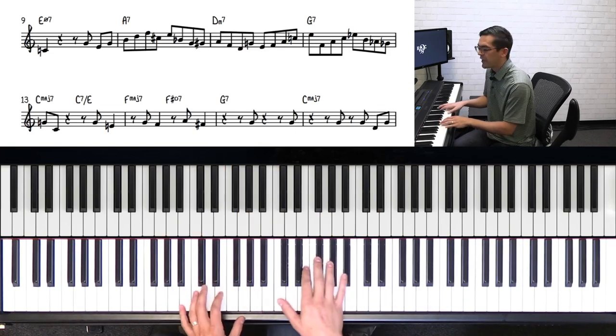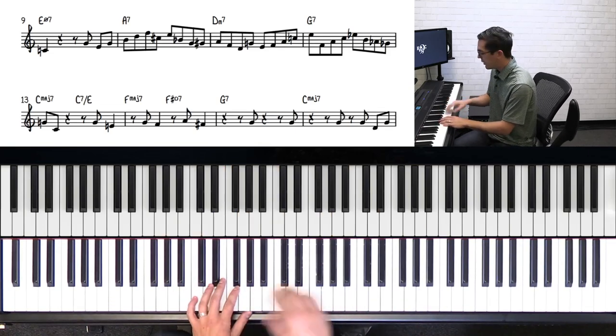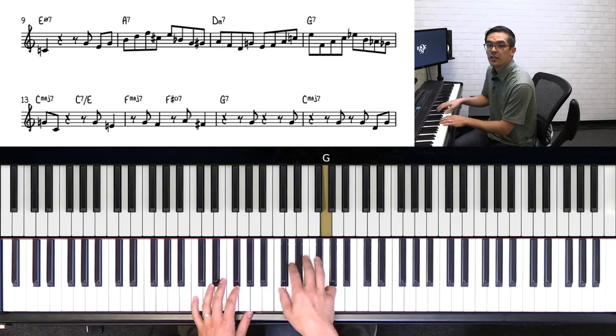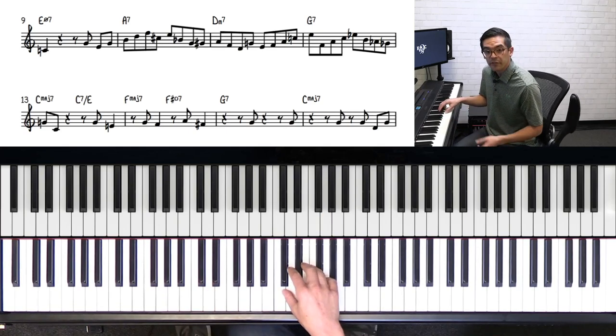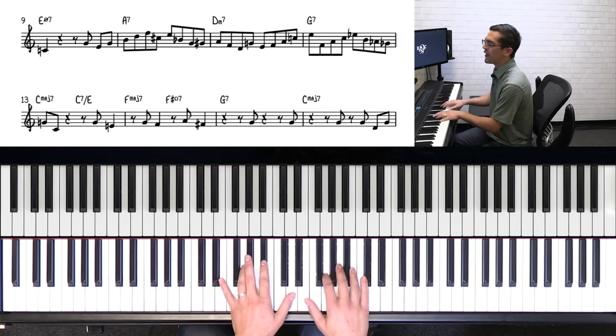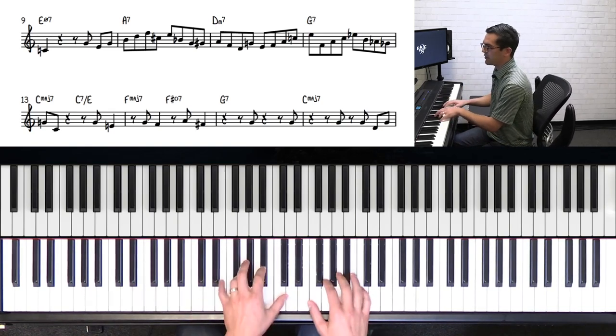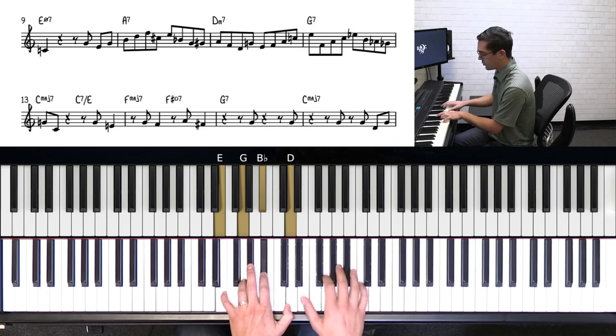Those last two notes, that A flat, G flat, is an enclosure, a chromatic enclosure, because he knows he wants to go back to G, C, which is the original motif from the beginning of the solo. So let's play that whole line all in context. Here it is, 1, 2, 3, 4.